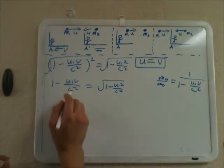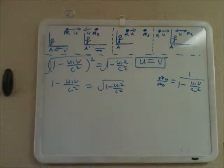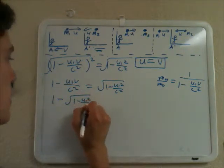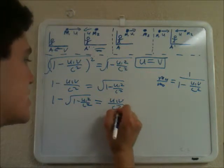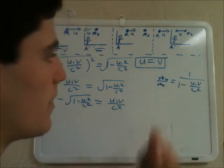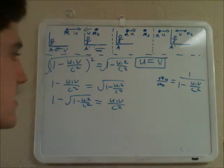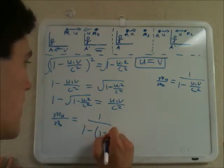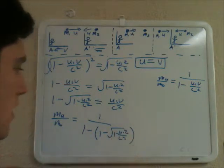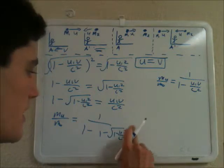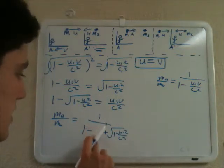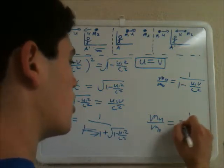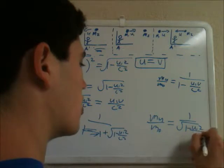Now I'm going to add u1 v over c squared to both sides and subtract the square root of 1 minus u1 squared over c squared. So I get 1 minus the square root of 1 minus u1 squared over c squared equals u1 v over c squared. I have this u1 v over c squared here and in my mu over m0 expression, so I'll replace it. So mu over m0 equals 1 over 1 minus open-paren 1 minus the square root of 1 minus u1 squared over c squared close-paren. The 1s cancel, and I get mu over m0 equals 1 over the square root of 1 minus u1 squared over c squared.